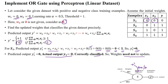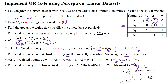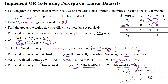For sample 2, x1=0, x2=1, and w1 and w2 are both 0. Substituting: w0·x0 + w1·x1 + w2·x2 = 0. Comparing with the threshold, the value is less than 1, so the predicted output is 0. The actual output is 1, but the predicted output is 0 — they do not match, so this is a misclassification and the weights must be updated.